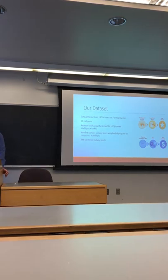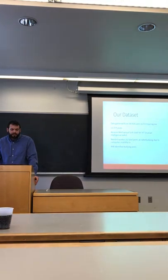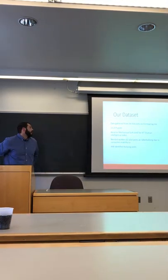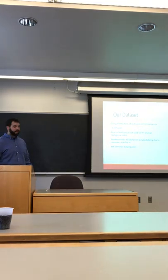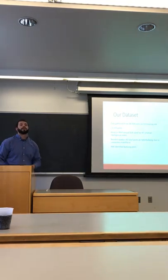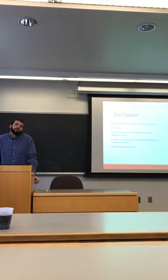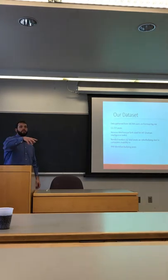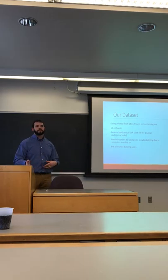For our dataset, we used formspring.me, an online question-and-answer based website where users can anonymously ask other users questions. From those 18,000 users, we randomly selected 13,159 posts. We used Amazon Mechanical Turk to label the data — Amazon provides a service where you can pay people to complete tasks that computers can't.